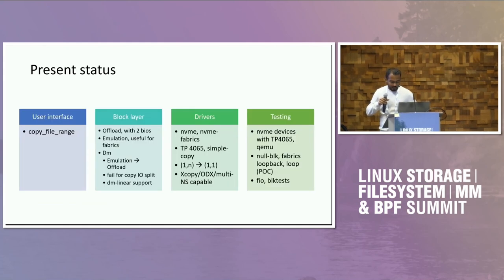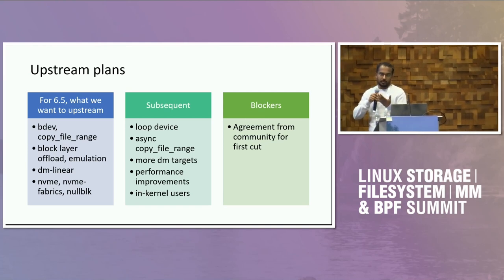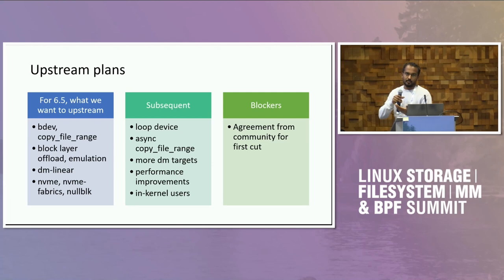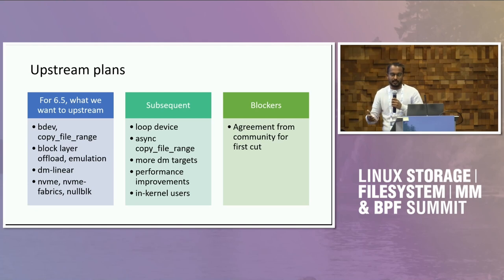The upstream plan is to have the default block device operations in place. From the block layer we have offload and emulation. DM linear support is basic — whenever there is a split we just come back, so it's basic infrastructure. We have a Q flag supporting only DM linear at present as the simpler use case, with a plan to expand to other DM targets going forward.